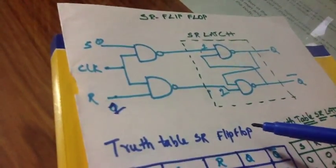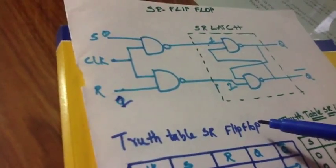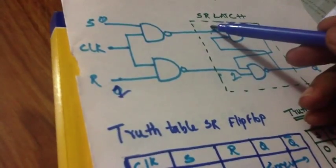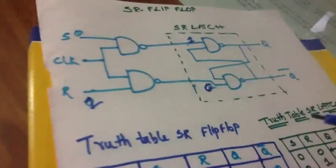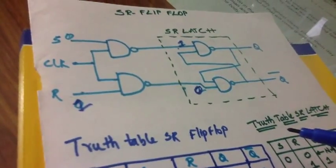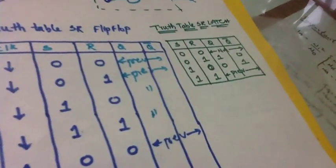Now let us see for the condition 0 and 1. When S is equal to 0, R is equal to 1, the input for the SR latch will be 1 and 0 respectively. Now 1 and 0 input for the SR latch will be 0 and 1, that is what we got here.